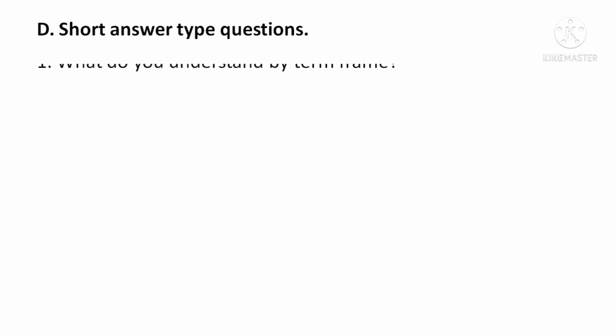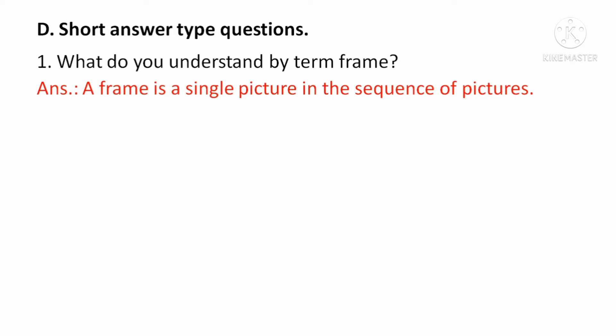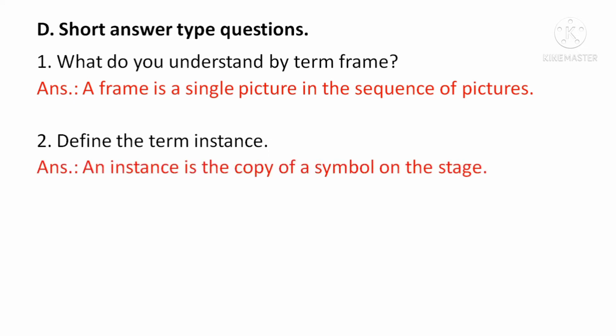Short answer type questions. What do you understand by term frame? Answer: a frame is a single picture in the sequence of pictures. Means, sequence of pictures में से single picture को frame कहते हैं. Next, define the term instance. An instance is the copy of a symbol on the stage. Means, symbol की एक copy को कहते हैं instance, जो की stage पर होता है.